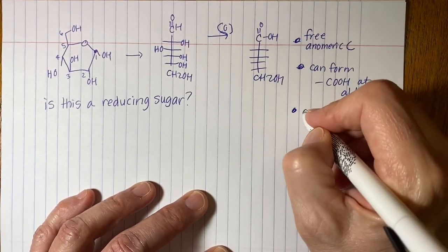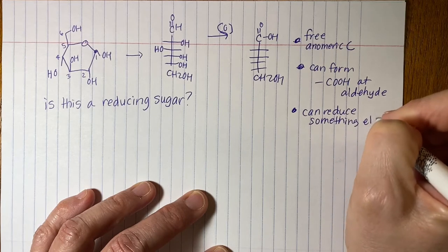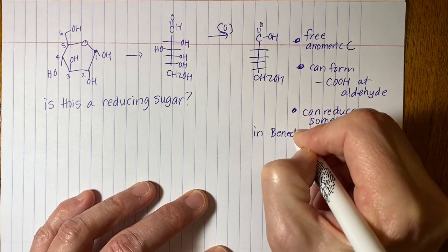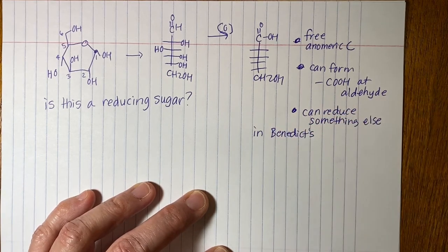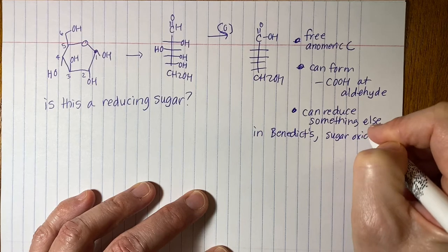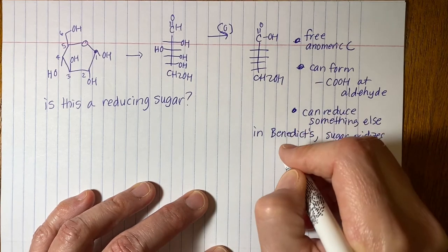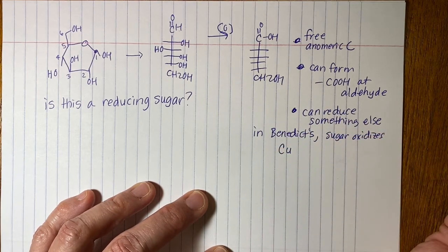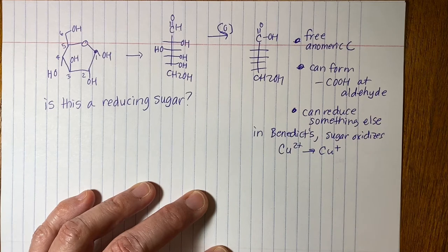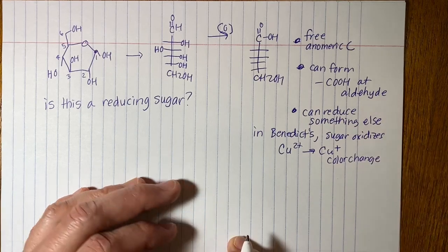And the last thing is, can reduce something else. Which means in a colorimetric test like the Benedict's test, which is what I did the very first day of class in that demonstration. The sugar oxidizes, which we've just seen that can happen. If you have the free aldehyde, you can make a carboxylic acid. And then the counter reaction in the Benedict's test is a copper reaction. It's copper 2+ to copper 1+. That's the reduction reaction. And there's a color change. So if any of those things happen, you have a reducing sugar.